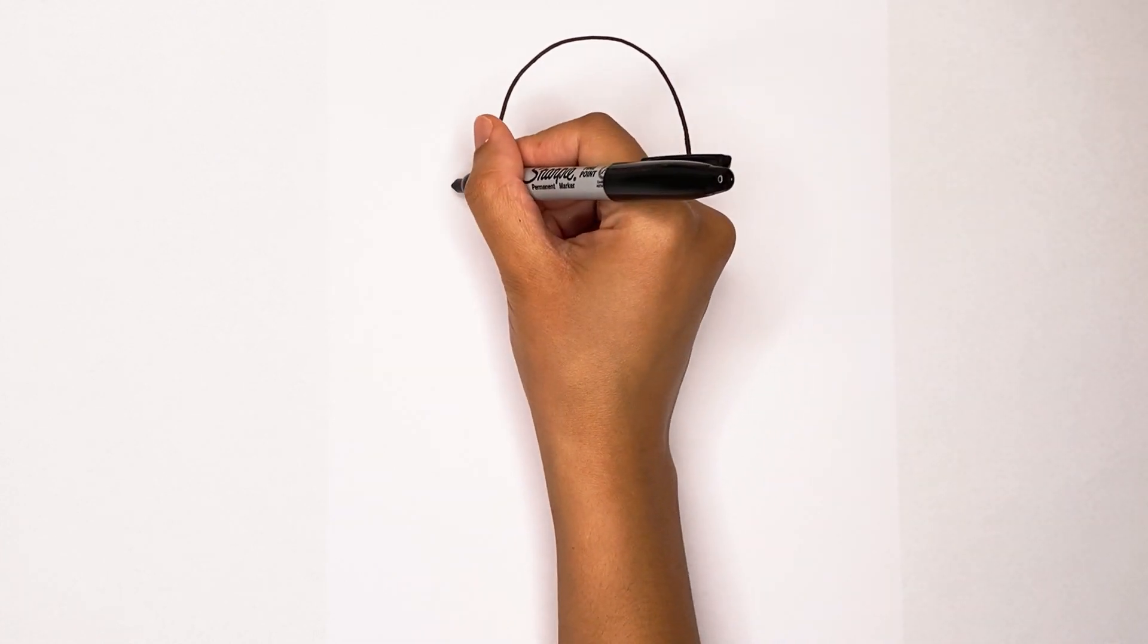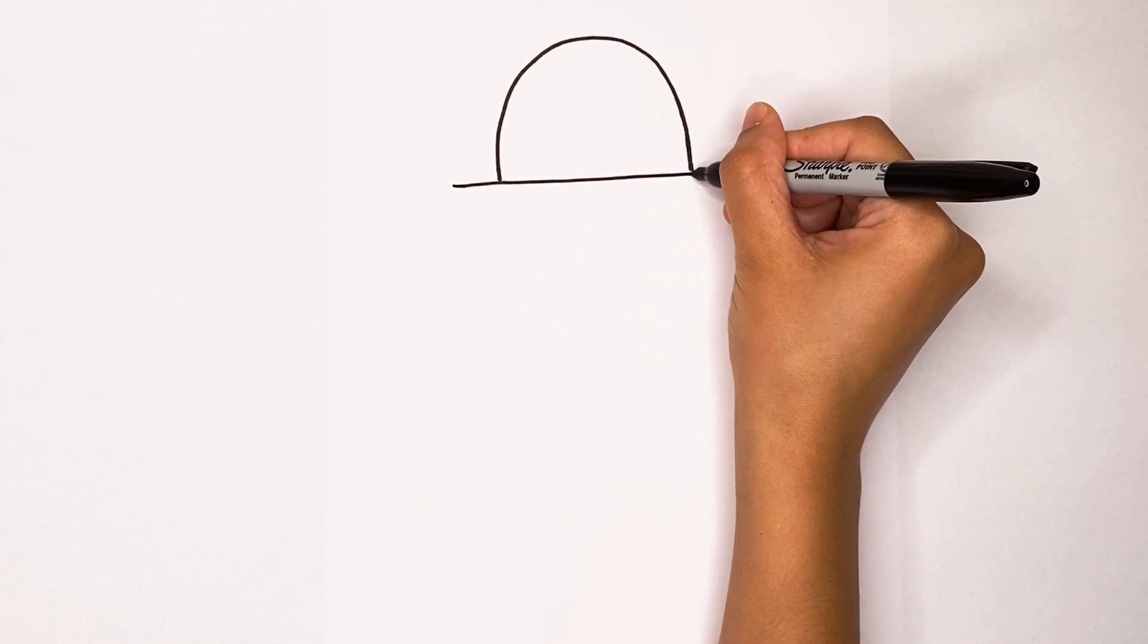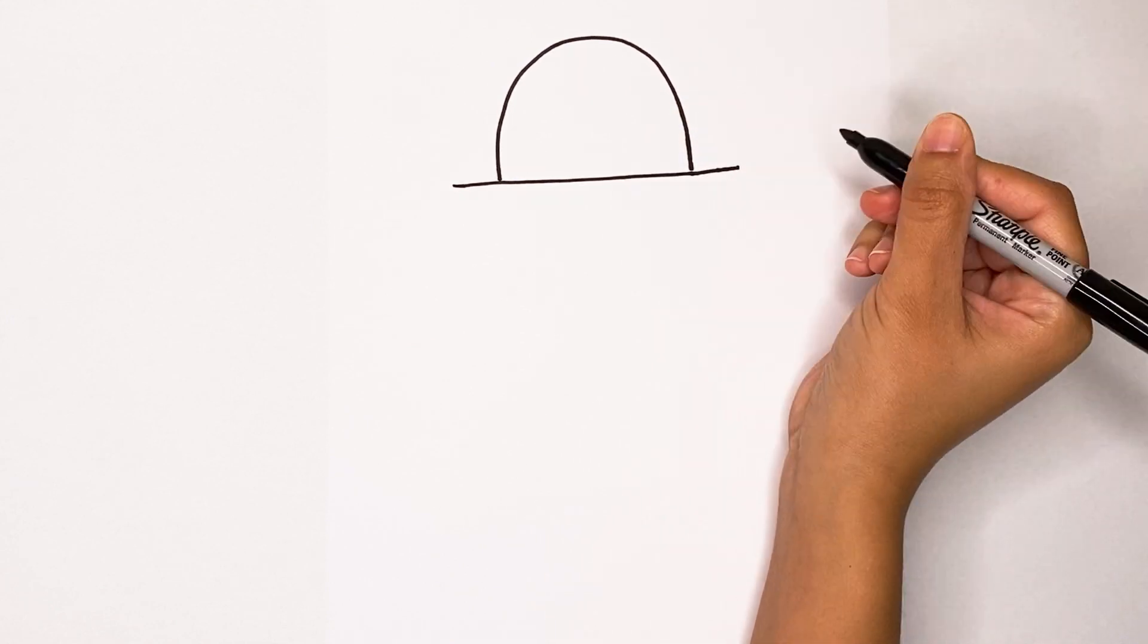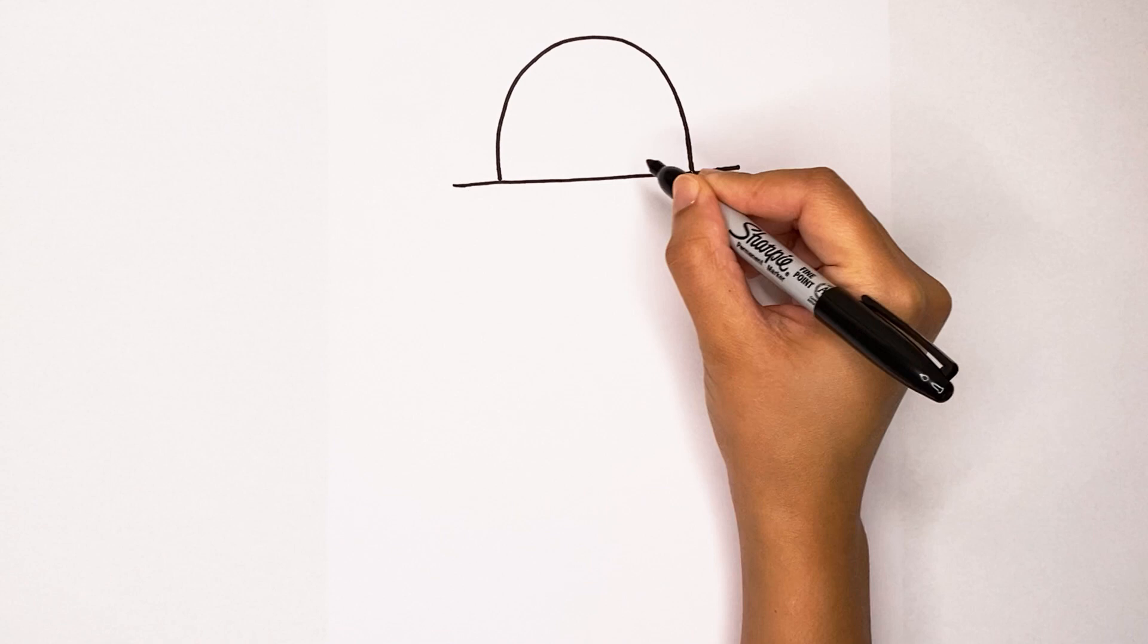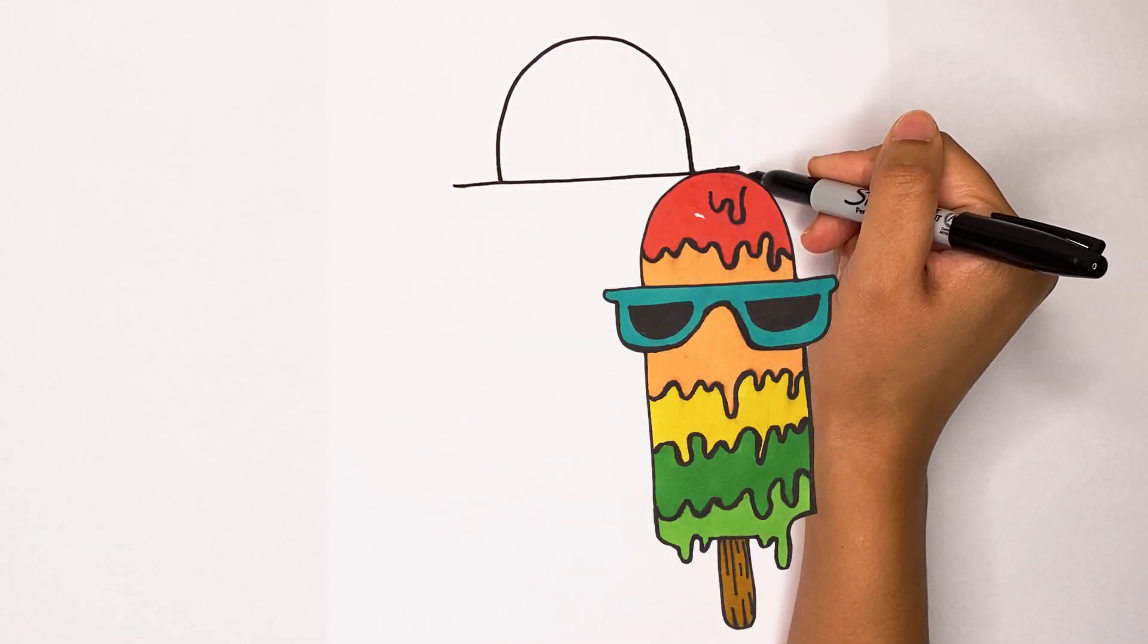Once you're done with that curve, draw a straight line right across it. Try to touch those lines as best you can. You can always go back and make them touch, just like this, so the line goes all the way across.